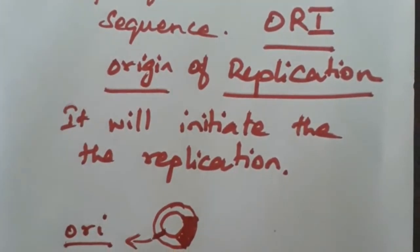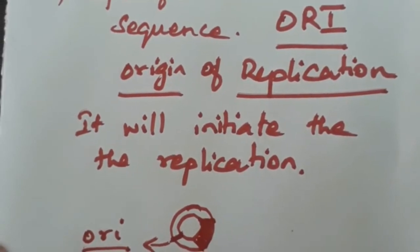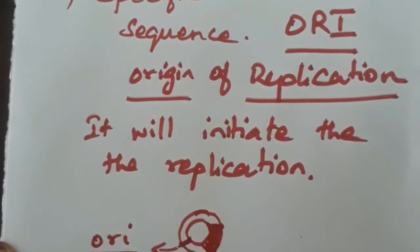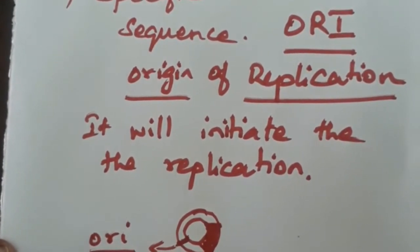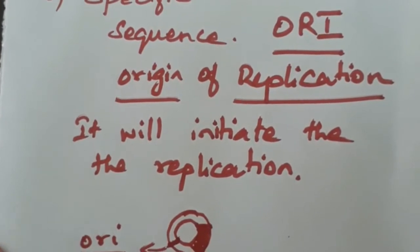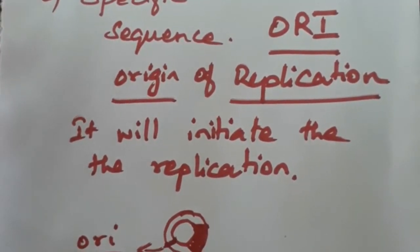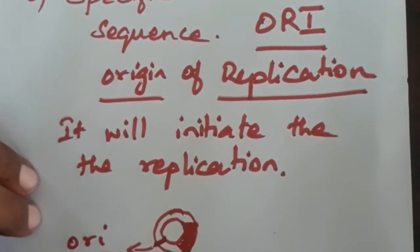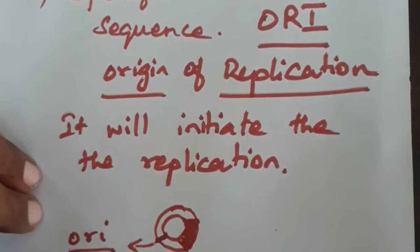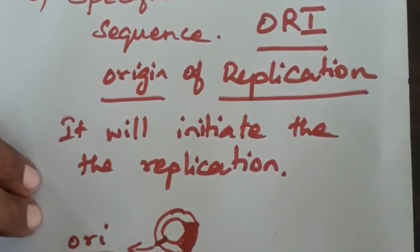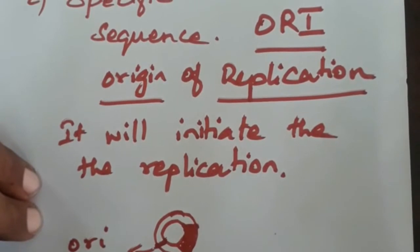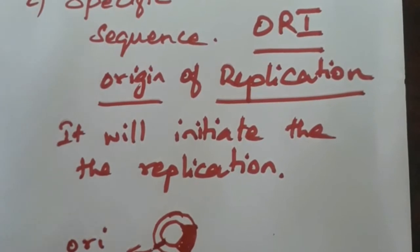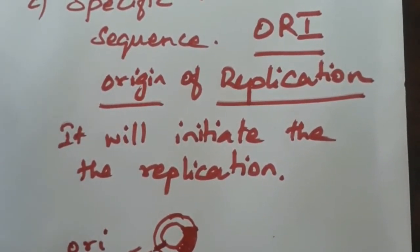It is a specific sequence present in the plasmid itself. The next important property is the suitable marker, which is always present in the plasmid. The most suitable marker available in the plasmid is antibiotic resistance. What is the use of this suitable marker, or selectable marker, present in the plasmid?